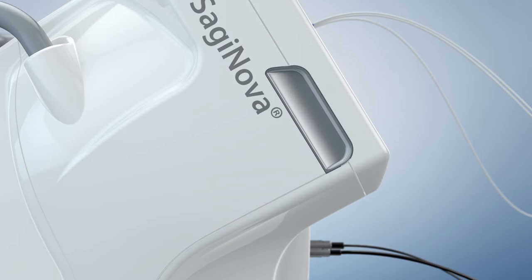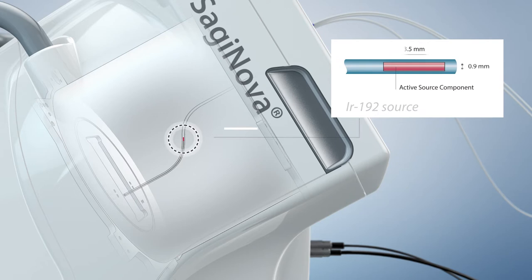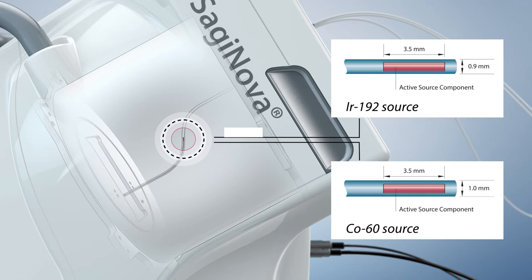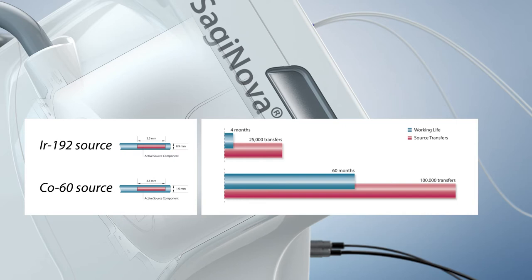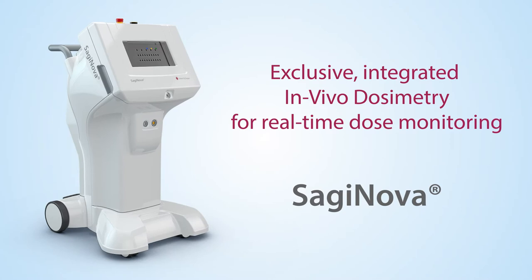Eckert & Siegler-Bebig exclusively provides the unique choice of two isotopes, Iridium-192 and Cobalt-60. The high quantity of source transfers and the long working life of the miniaturized Cobalt-60 source reduce time for source exchange logistics and increase valuable clinic uptime.